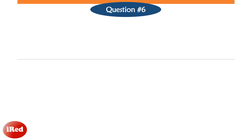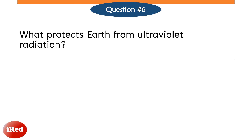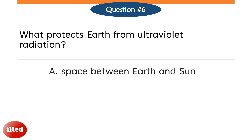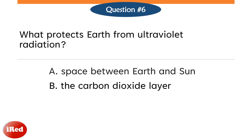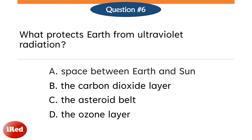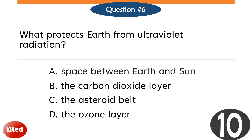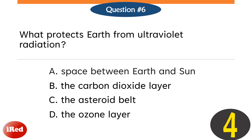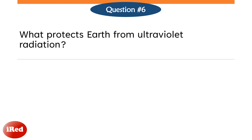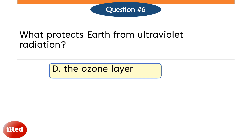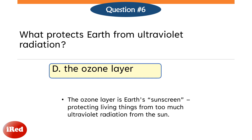Question number six. What protects Earth from ultraviolet radiation? Letter A, the space between Earth and the Sun. Letter B, the carbon dioxide layer. Letter C, the asteroid belt. Or Letter D, the ozone layer. The correct answer is Letter D, the ozone layer. The ozone layer is Earth's sunscreen — it protects living things from too much ultraviolet radiation from the sun.